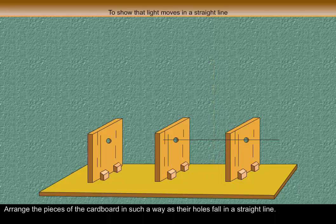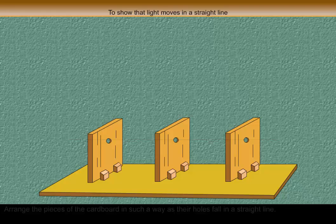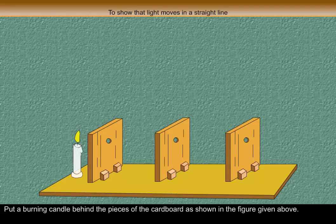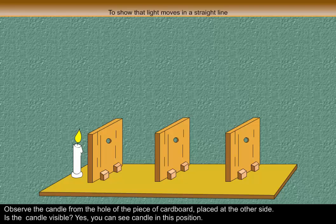Arrange the pieces of the cardboard in such a way that their holes fall in a straight line. Put a burning candle behind the pieces of the cardboard as shown in the animation. Observe the candle from the hole of the piece of cardboard placed at the other side.